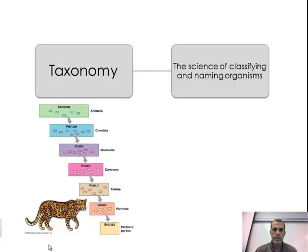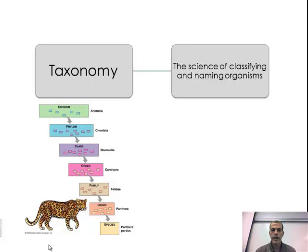Moving forward, first we're going to define what taxonomy means. Taxonomy is the science of classifying and naming an organism. What they're doing is looking at an individual organism and taking it from the most general — which is the kingdom — all the way down to the most specific, which is the species. You can see on the left-hand side the classification of a particular organism, starting with Animalia and working down toward the species, which is the most specific.